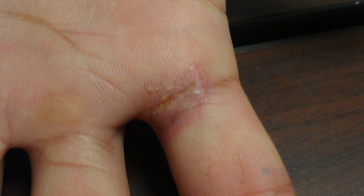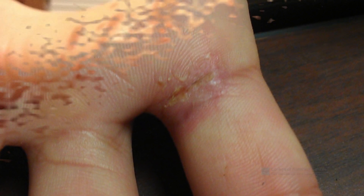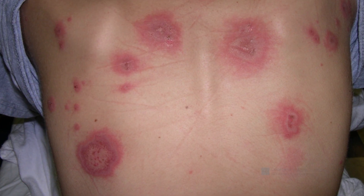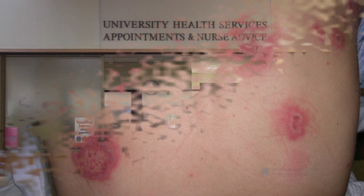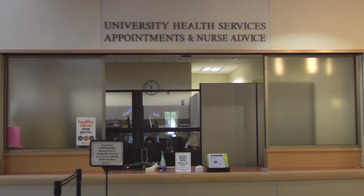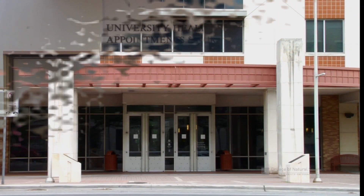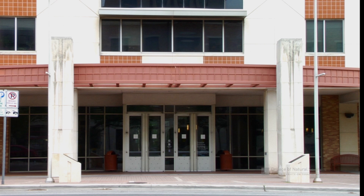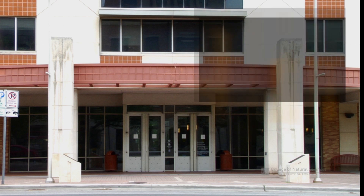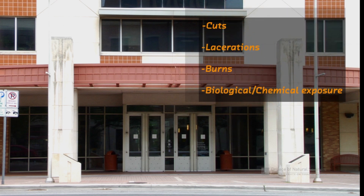Should an injury occur in the laboratory, you should make your instructor aware of it regardless of how minor it may seem. After administering first aid, they may send you to the University Health Services office, located in the Student Services Building. Things that may require first aid in the laboratory include cuts, lacerations, burns, and biological or chemical exposures.